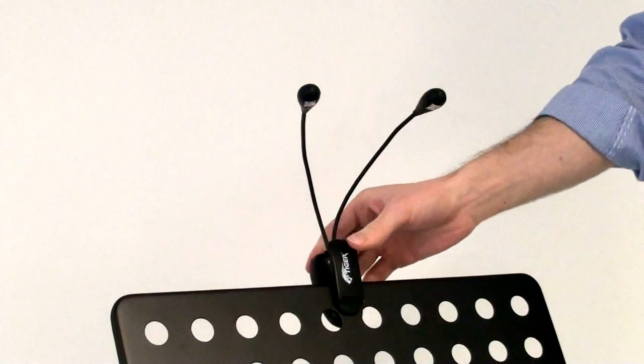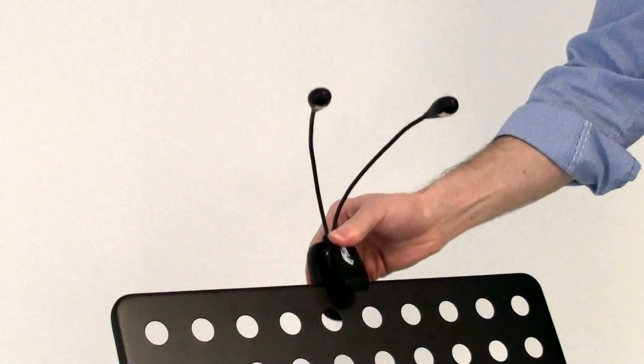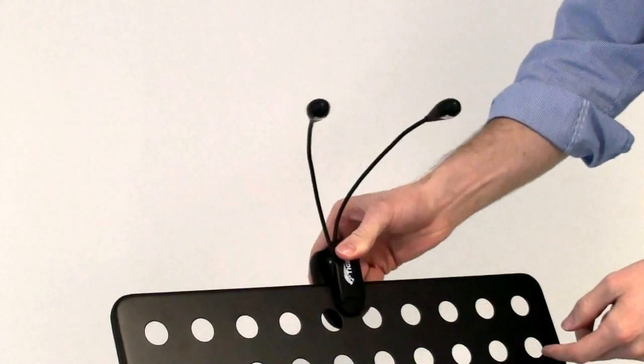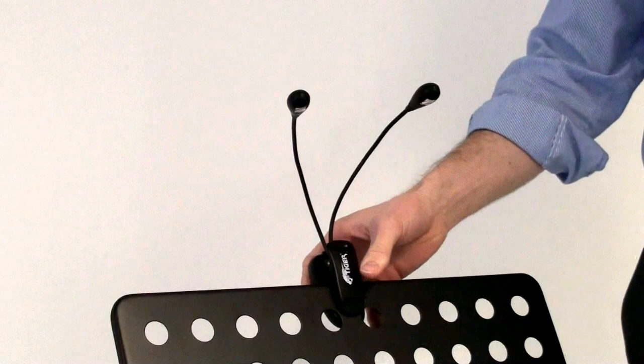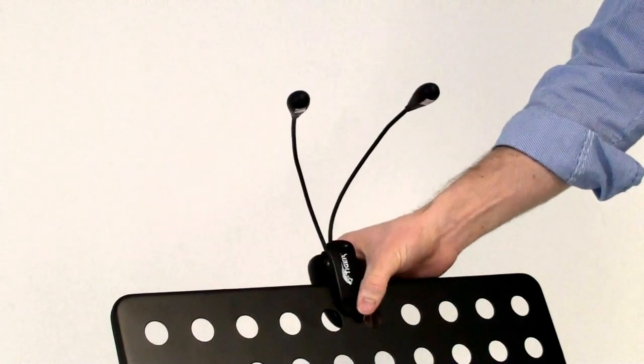So there we are, there's the lights, and we also have a rubberized clip which will go onto your stand, but the rubber there just protects your sheet music and your stand as well, to stop it from scratching or anything.